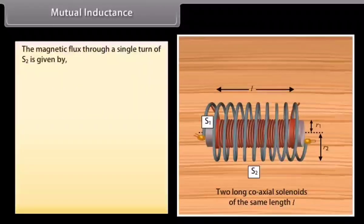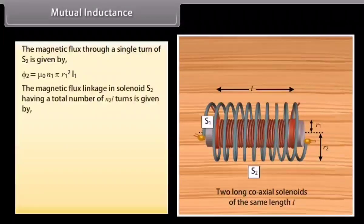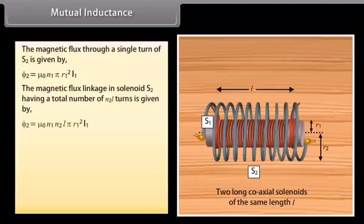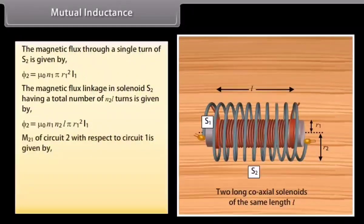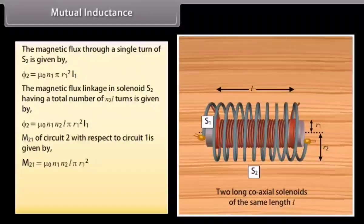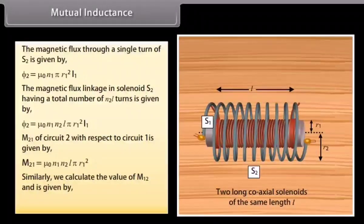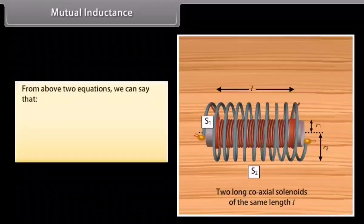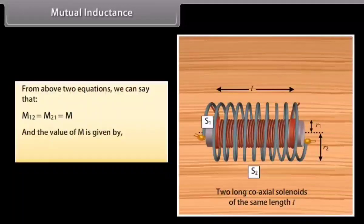The magnetic flux through a single turn of S2 is given by mu₀·N1·pi·R1²·I1. The magnetic flux linkage of solenoid S2 having a total of N2·L turns is given by mu₀·N1·N2·L·pi·R1²·I1. From these equations, M12 equals M21, which equals M, and the mutual inductance M is given by mu₀·N1·N2·L·pi·R1².